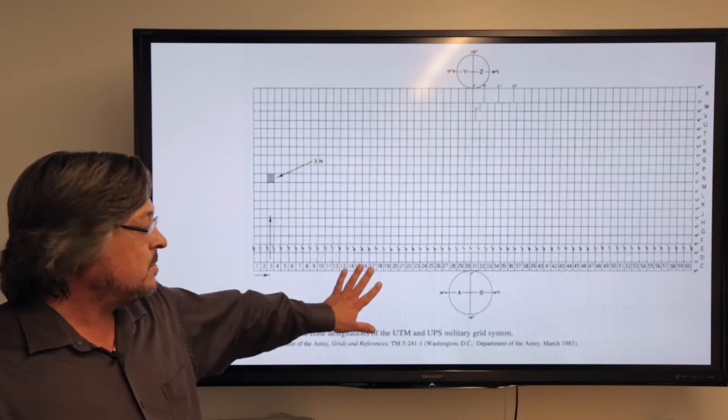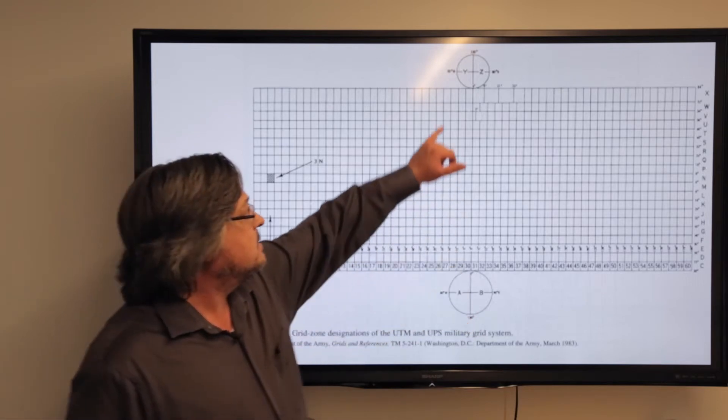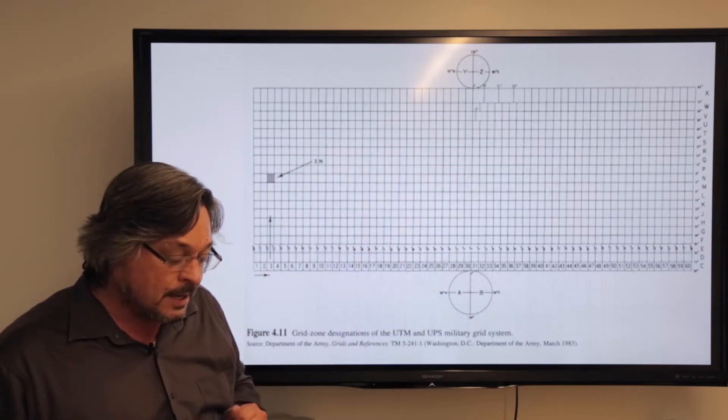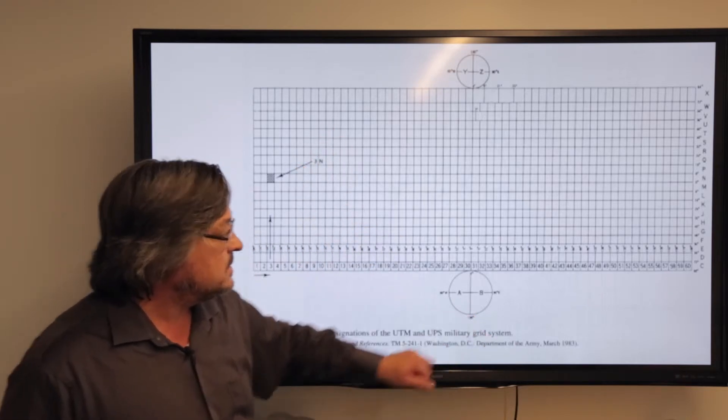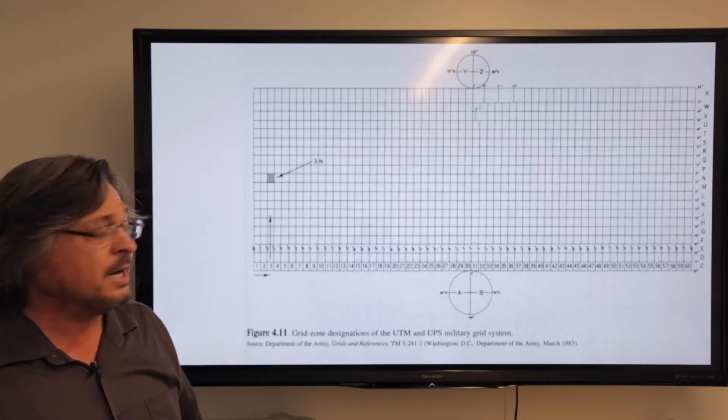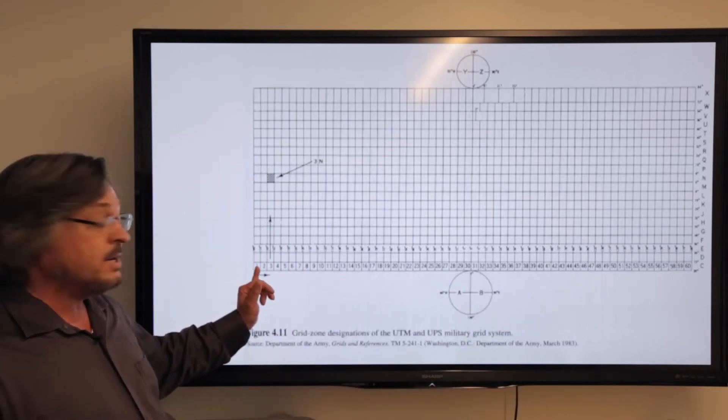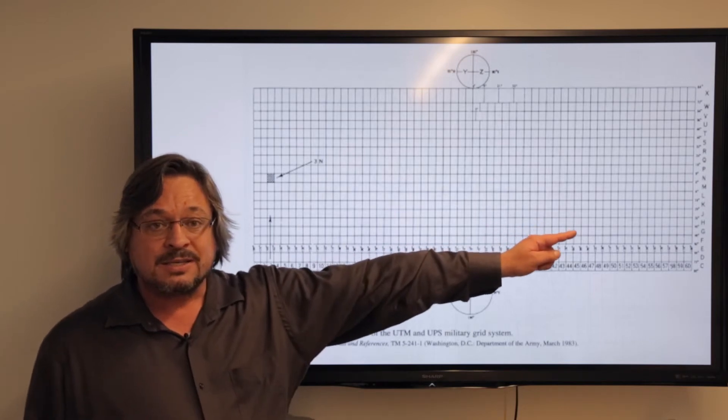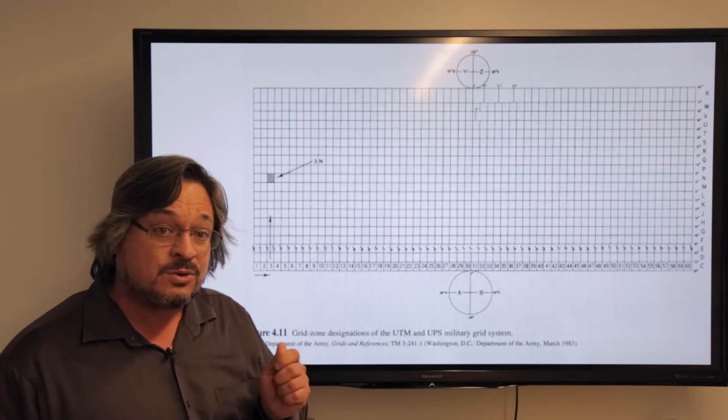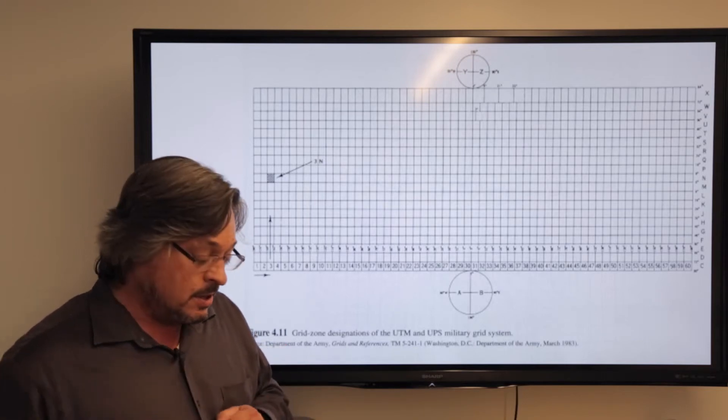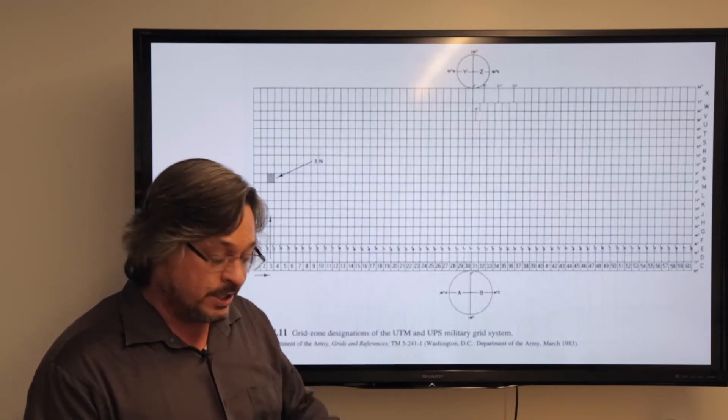This is the UTM grid for the globe. Notice that the poles use a slightly different system. Once you get above 84 degrees north or 80 degrees south, then we switch. We split it up into 60 zones starting from the international dateline and wrapping its way to the east around the globe. Each zone is six degrees of longitude wide, then split down to three degrees at the central meridian within the zone.